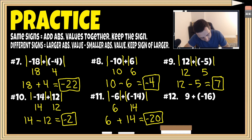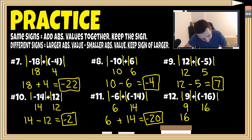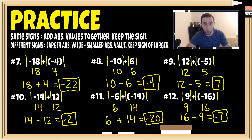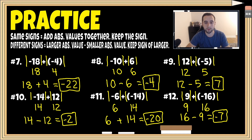For number 12, we have different signs. The absolute value of nine is nine, and the absolute value of negative 16 is positive 16. Take the larger minus the smaller: 16 minus nine gives us seven. Remember to keep the sign of the larger number — 16 was originally negative — so the final answer is negative seven. Hope you went six for six in the practice session. After watching this, you're able to add integers utilizing absolute value. Thanks for watching, and I'll see you in the next video.